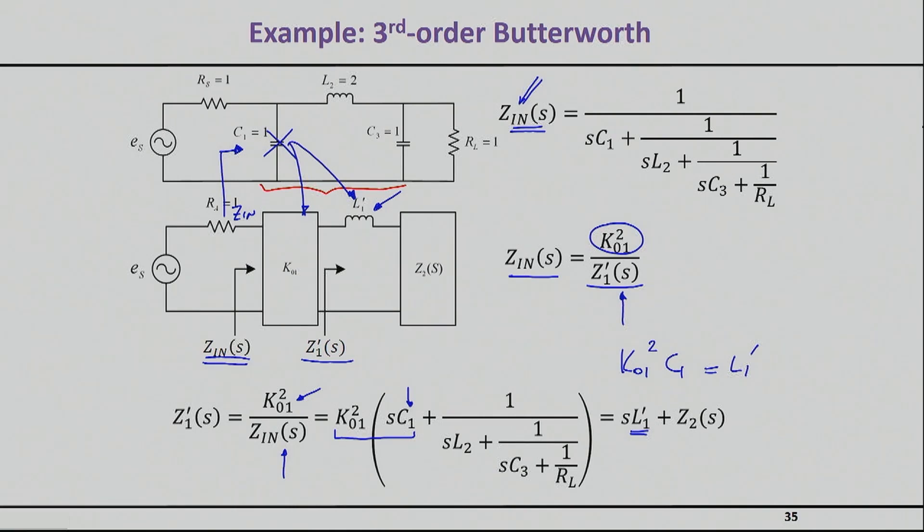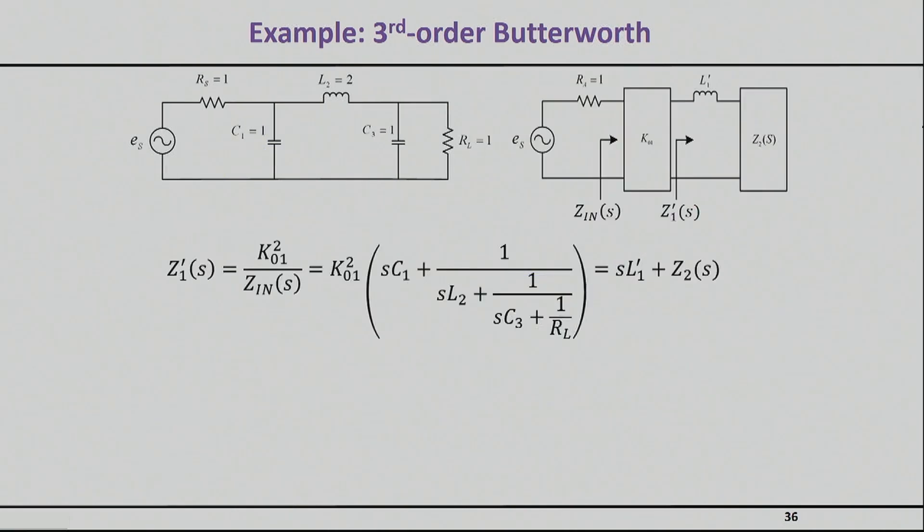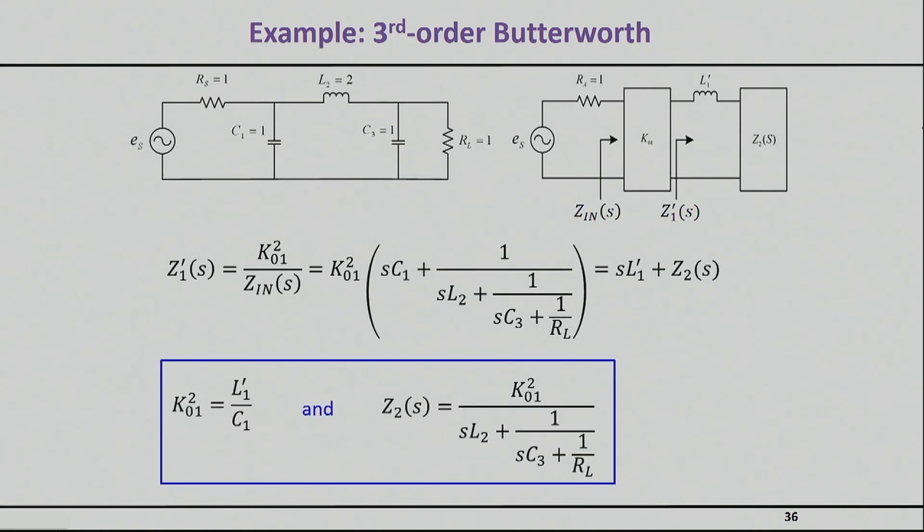That essentially is the first step, which here I have written a little bit more clearly. Now I know the value of my first coupling section or the first inverter. For this idea to work, the first inverter K01 square must be equal to L1 prime, the new value which I can choose to be anything I like, over the C1 where the C1 was calculated by requiring this filter to be Butterworth. We also saw this thing as G1, which is basically the value we can get from the tables.